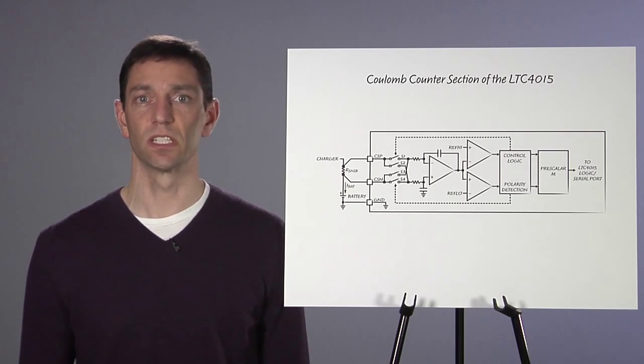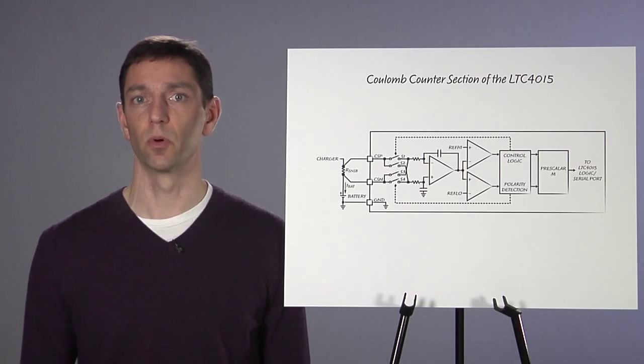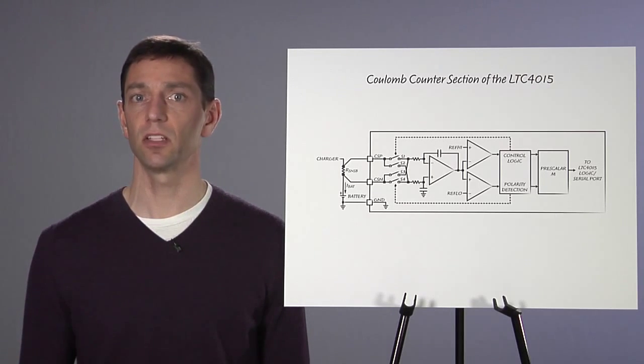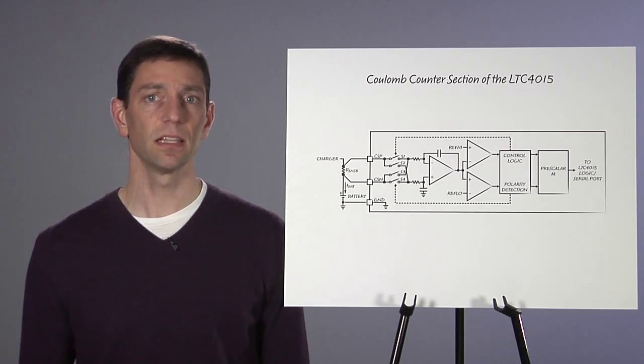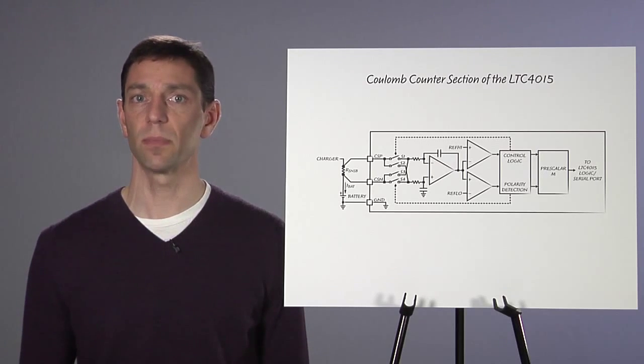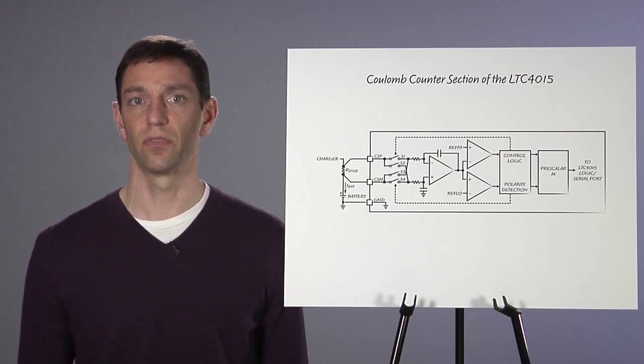The battery series resistance parameter is of particular importance because when combined with the Coulomb counter information, the overall health of the battery can be tracked. Battery series resistance tends to increase as the battery ages and degrades. By setting a limit on this resistance, the system can be alerted and the user can be notified to replace the battery prior to a catastrophic failure.